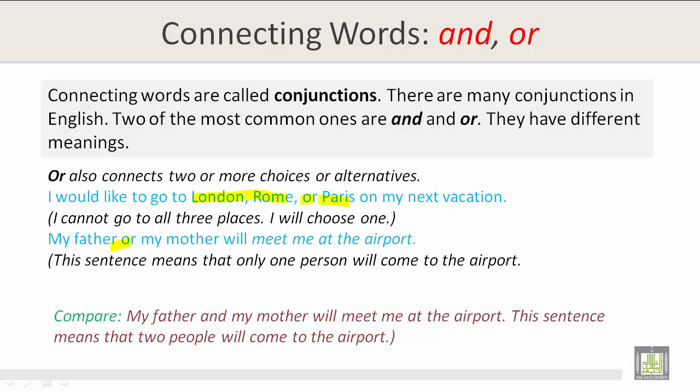My father or my mother will meet me at the airport. This sentence means that only one person will come to the airport. In both of these examples, or connects two or more choices or alternatives.